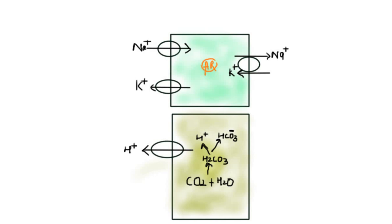As aldosterone comes via the blood into the cell, it binds with the aldosterone receptor. When it binds, it influences the expression of certain transporter proteins. The first transporter protein upregulated is the sodium-potassium ATPase pump. Another transporter protein upregulated by aldosterone is the sodium channel, called the epithelial sodium channel (ENaC).